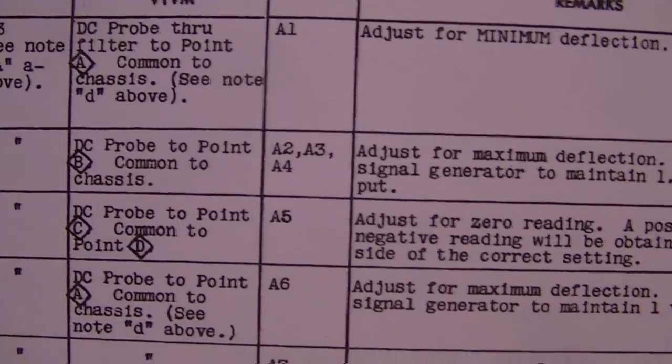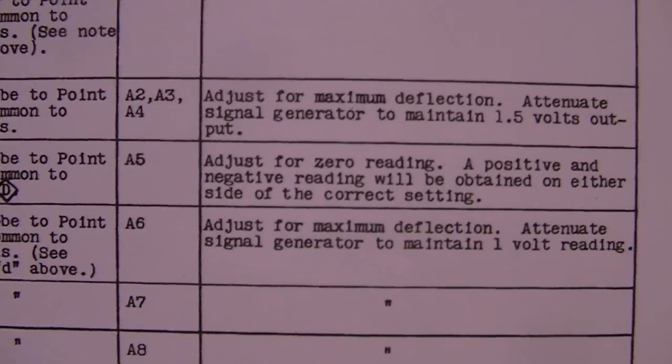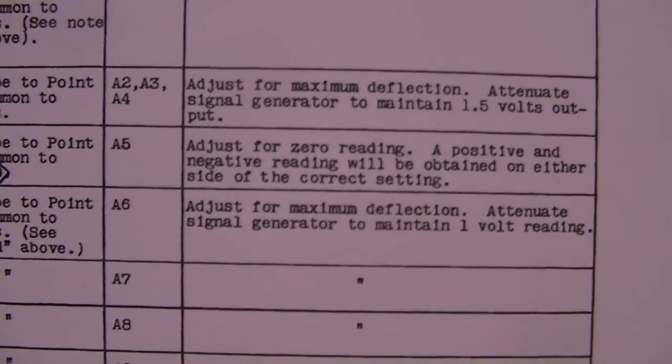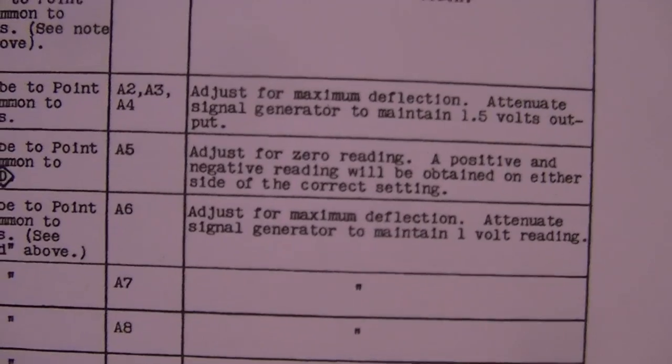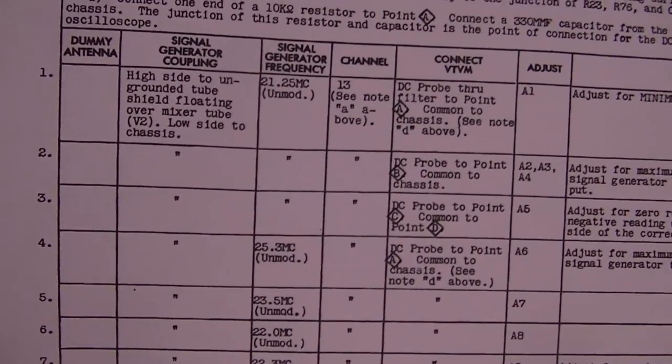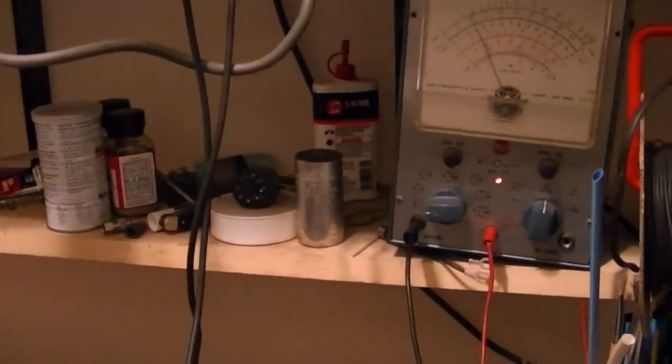And then the next few steps are to peak the audio IF stages. That's A2, A3, A4. And then A5 is ratio detector. You adjust that so you get a zero reading and the frequency to either side of 21.25 should make the meter deflect positive and negative.